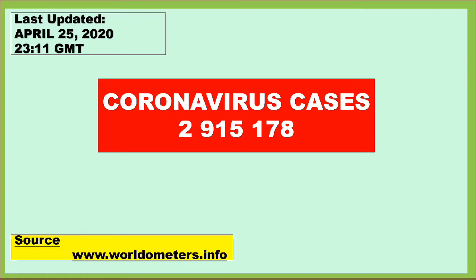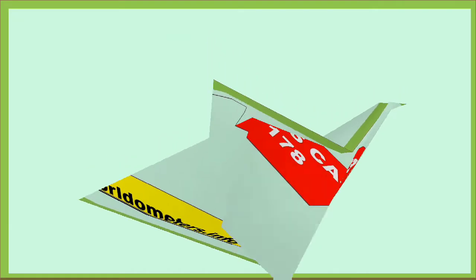Our lesson for today is all about rounding numbers to the nearest hundred thousand and million. To round a number means to approximate a number to a particular place value. Numbers may be rounded to the nearest tens, hundreds, thousands, millions, etc. The place value to which we round off a number is called the rounding place.